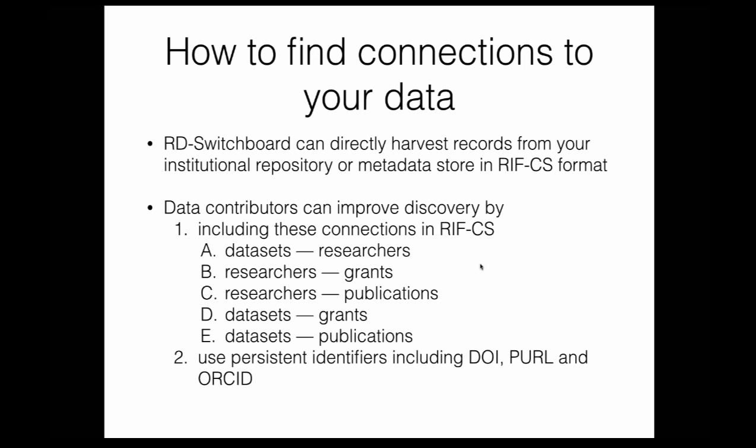If you want to include your data in this system, currently the switchboard platform harvests records from the ANZ repository, Dryad, CERN, Figshare, ORCID, and a number of other partners. By default, we have the capability of reading information in the RIFS format. If your data is already in Research Data Australia, we are reading that information. If you have an external repository you want to add, there is a harvesting platform that can read this independently. If you want to see improved discovery on your dataset connections, these are the things we suggest including in the RIFS object.